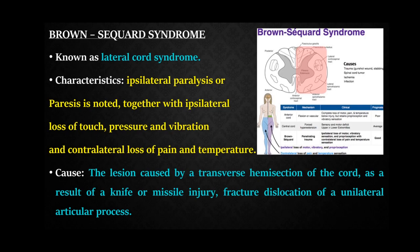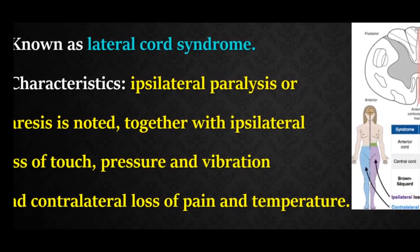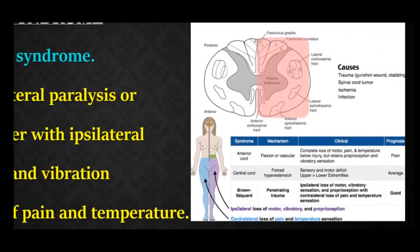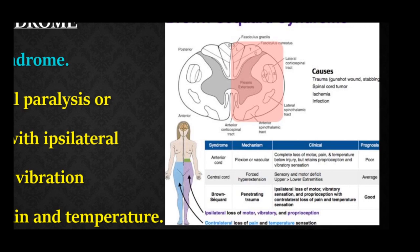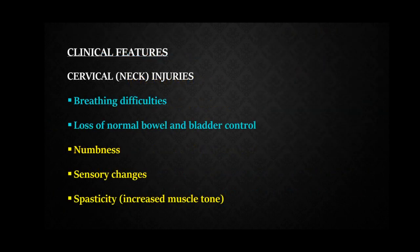Brown-Séquard syndrome, also known as lateral cord syndrome, is mainly characterized by ipsilateral paralysis, ipsilateral loss of fine touch, pressure, and vibration, and contralateral loss of pain and temperature. This occurs because a hemisection of the spinal cord is affected — one half of the spinal cord is damaged. The main causes are transverse hemisection of the cord as a result of a knife or missile injury, fracture dislocation, or a unilateral articular process injury.